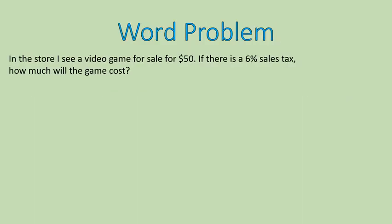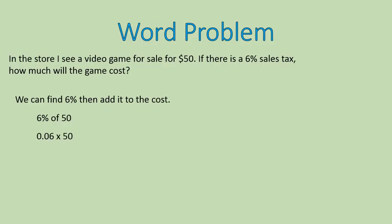First word problem: In the store, I see a video game on sale for $50. If there's a 6% sales tax, how much will the game cost? We're going to find 6% of the cost and add it to our original cost of $50. So I'm finding 6% of 50 — I write 6% as a decimal, 0.06. Of means multiplication. 0.06 times 50 gives me 3. That is not the cost of the video game — that's the cost of the 6% tax. So I take my original amount, $50, add my tax of $3, and get my total of $53. The game will cost $53.